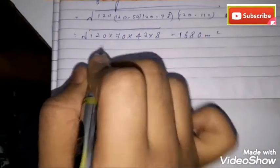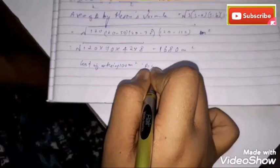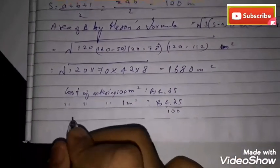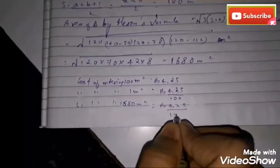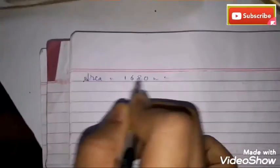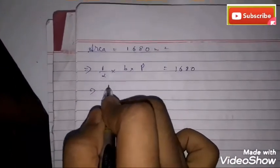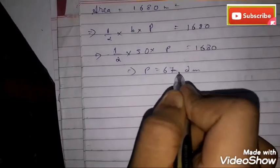Now finding the cost of watering: cost of 100 square meters is rupees 4.25, so cost per square meter = 4.25 / 100. Total cost = (4.25 / 100) × 1680 = rupees 71.40. For the perpendicular: ½ × base × perpendicular = area, so ½ × 50 × perpendicular = 1680, giving perpendicular = 67.2 meters.